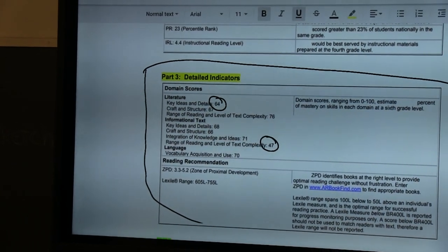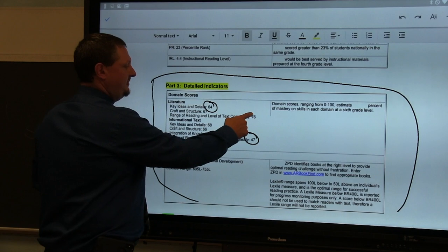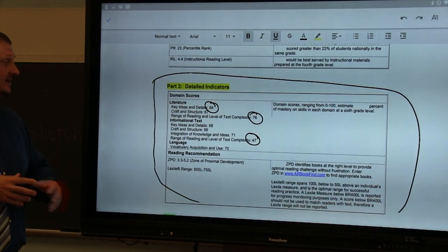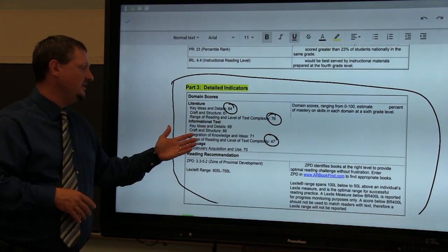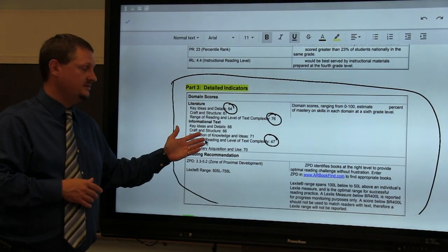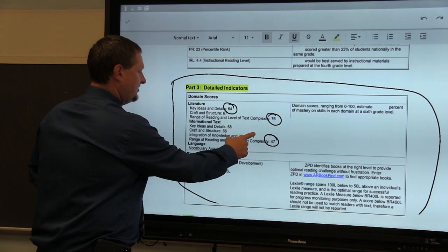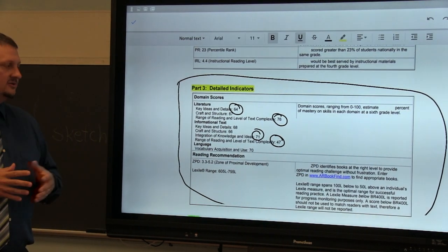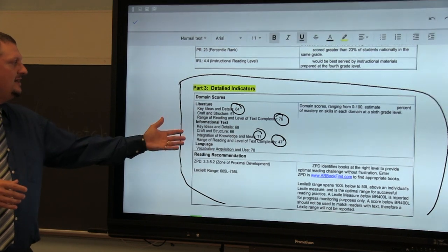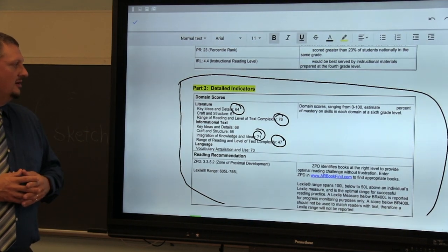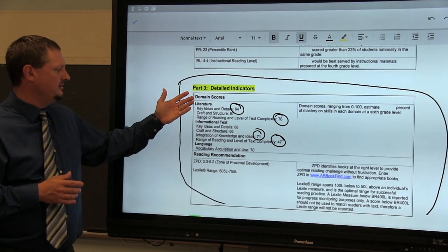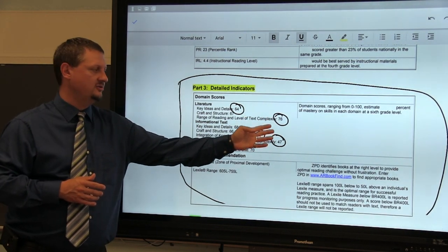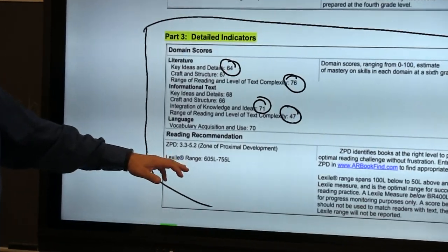But this is also important to accentuate the fact that they also have many strengths. Here's a strength for this student in range of reading and level of text complexity within literature but notice that was a relative weakness here in informational text. Additionally here's a strength for this student in integration of knowledge and ideas within informational text. So when we're designing appropriate intervention for this student our focus is going to be either in literature and informational text and looking at how we can use this strength to improve this weakness is the Lexile range.